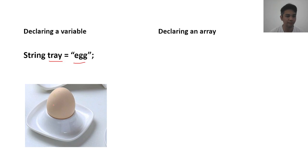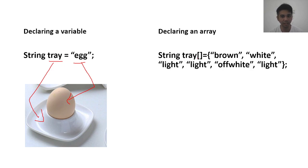So first, if I will declare a variable, a normal variable, let's say I will have a variable named tray. So you have one container, and it has a value, the string egg, EGG. So if you are going to present it visually, it's like this. So this is your value. And the tray is this one. So tray is the container. Egg is the value. But if you will declare an array, it looks something like this. It's string tray with brackets, and it will get the different values. Brown, white, light, off-white, and light.